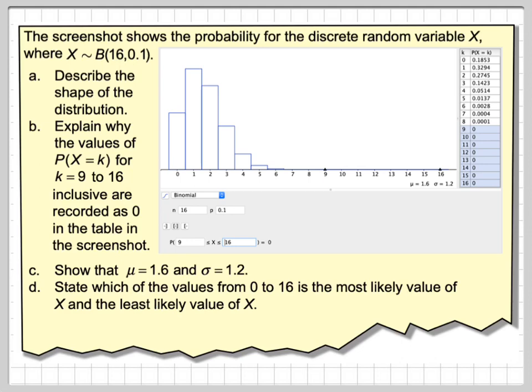Show that the mean is 1.6, that's given here, and that the standard deviation is 1.2. State which of the values from 0 to 16 is the most likely value of X and the least likely value of X.